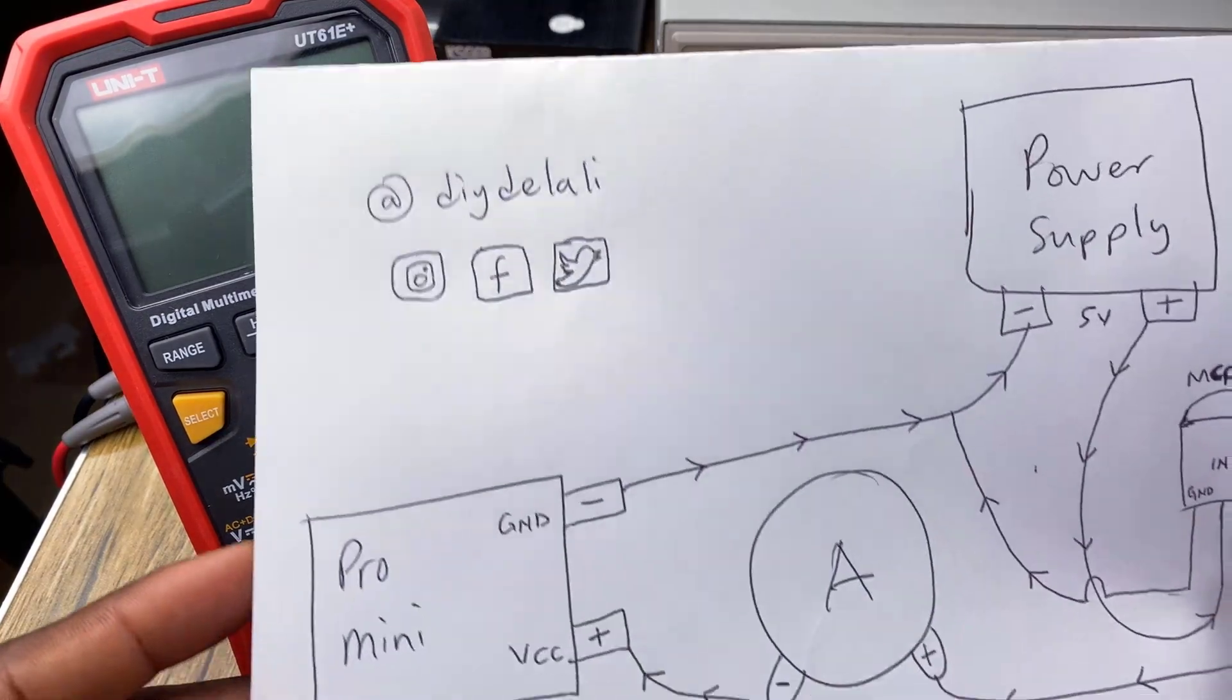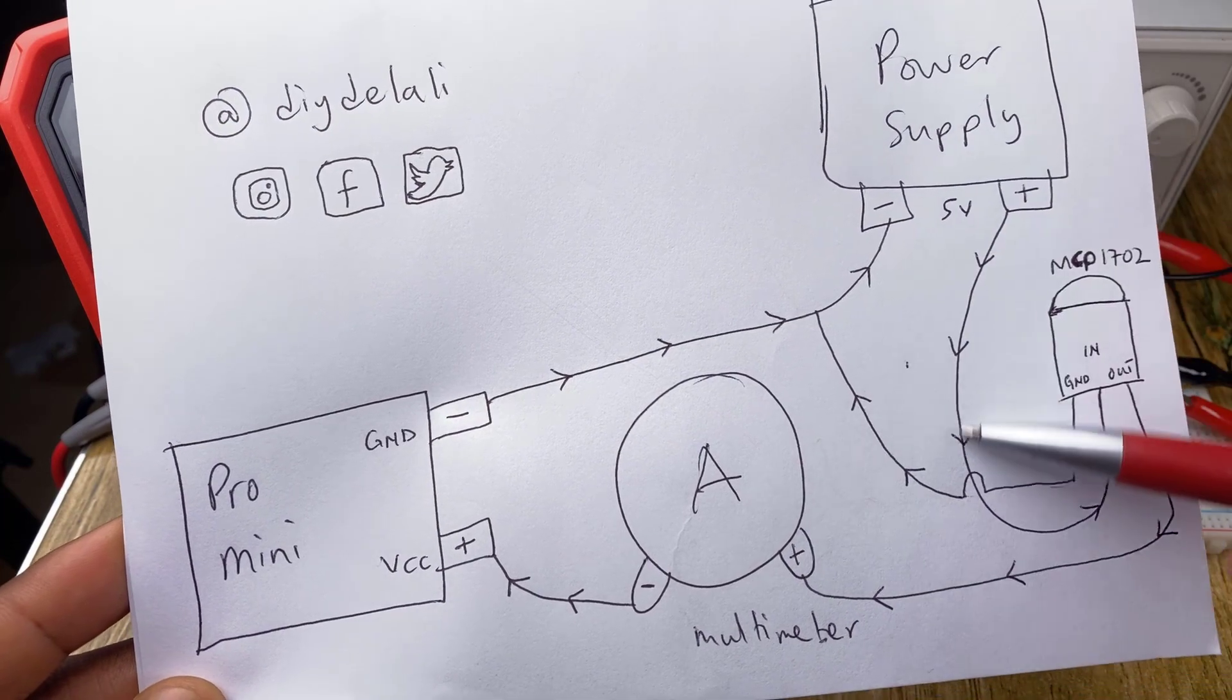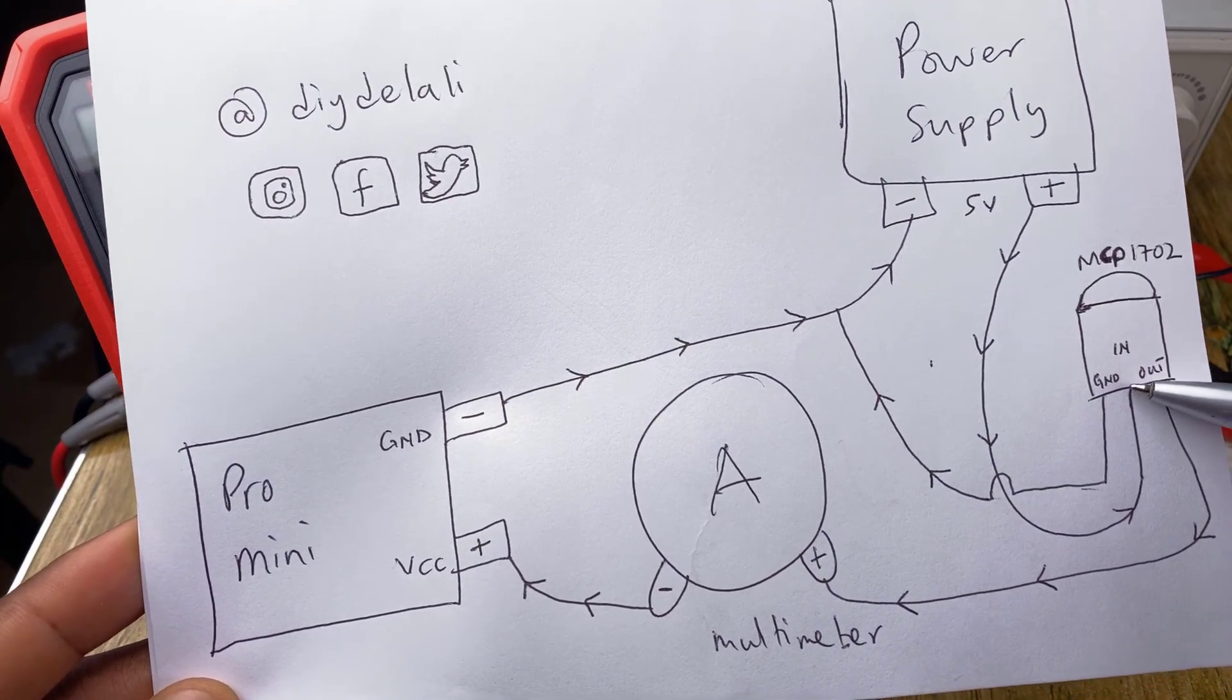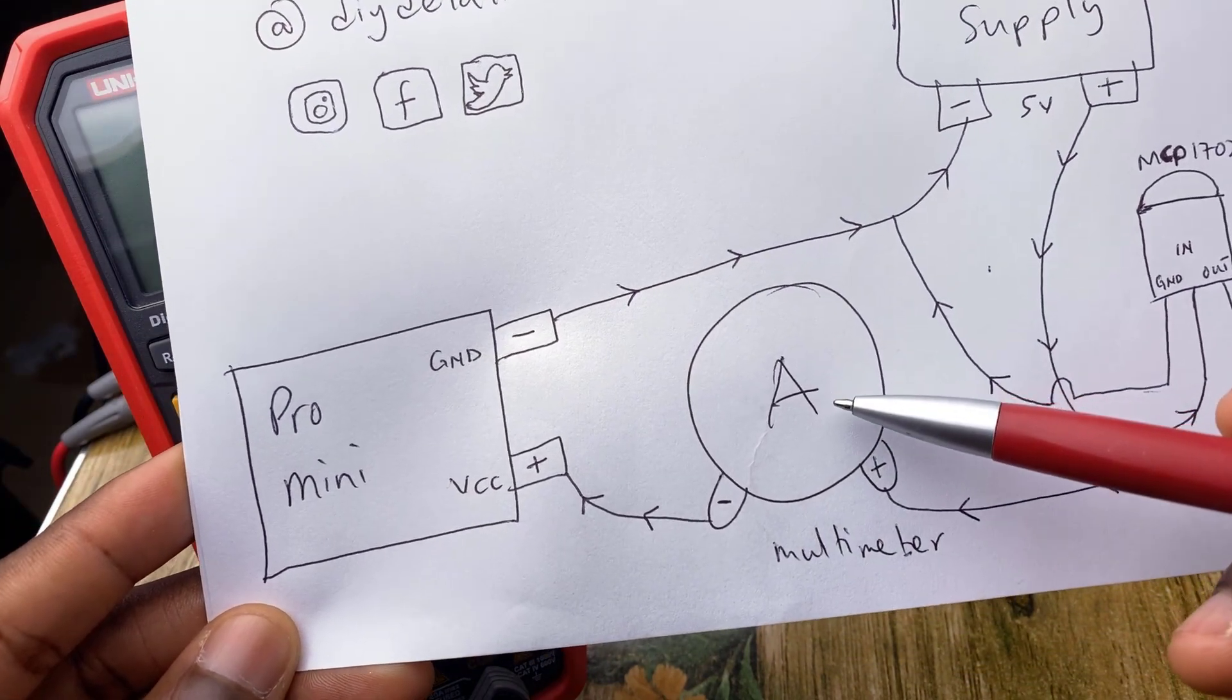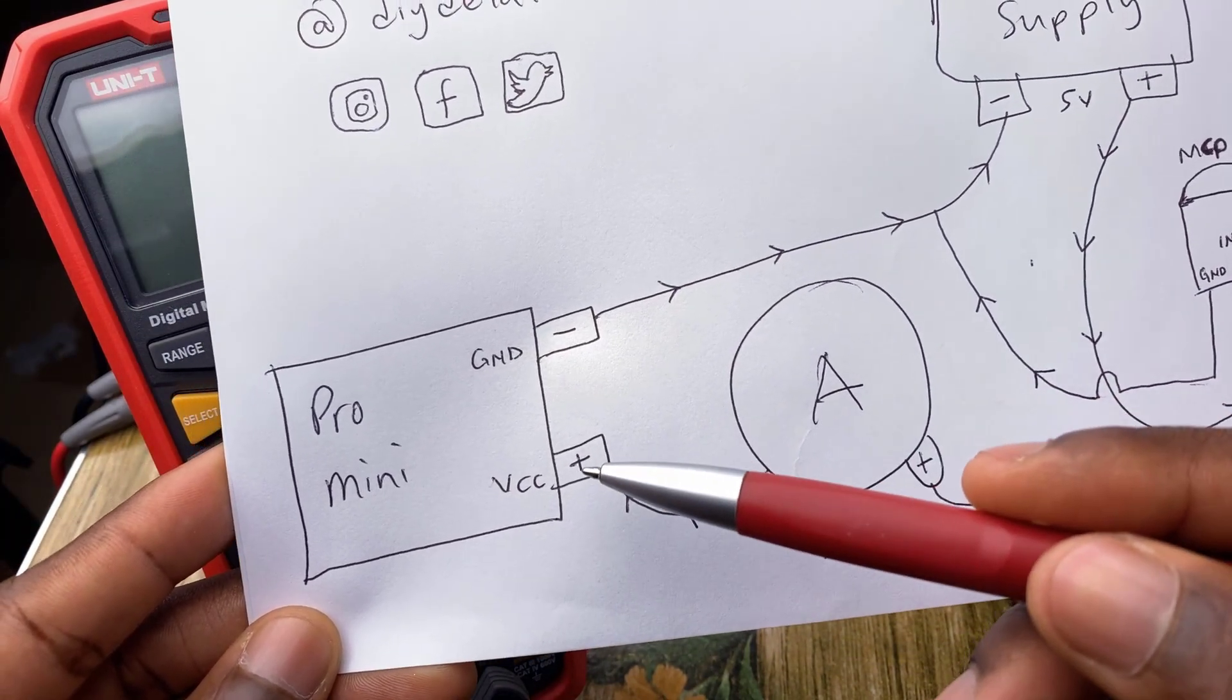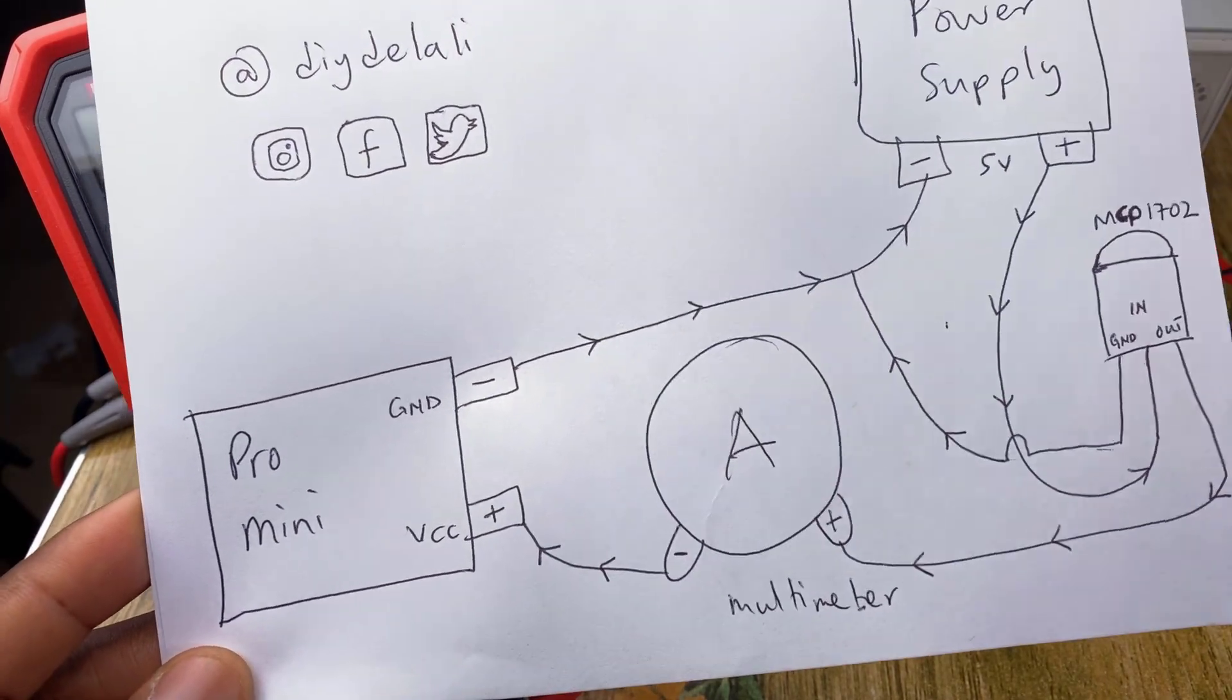This is the schematic for the new setup. So we have here our power supply. The 5 volts from the power supply goes into the regulator and then out from the regulator goes 3.3 volts to the multimeter and then from the multimeter to the Pro Mini and then back to the power supply in the regulator.